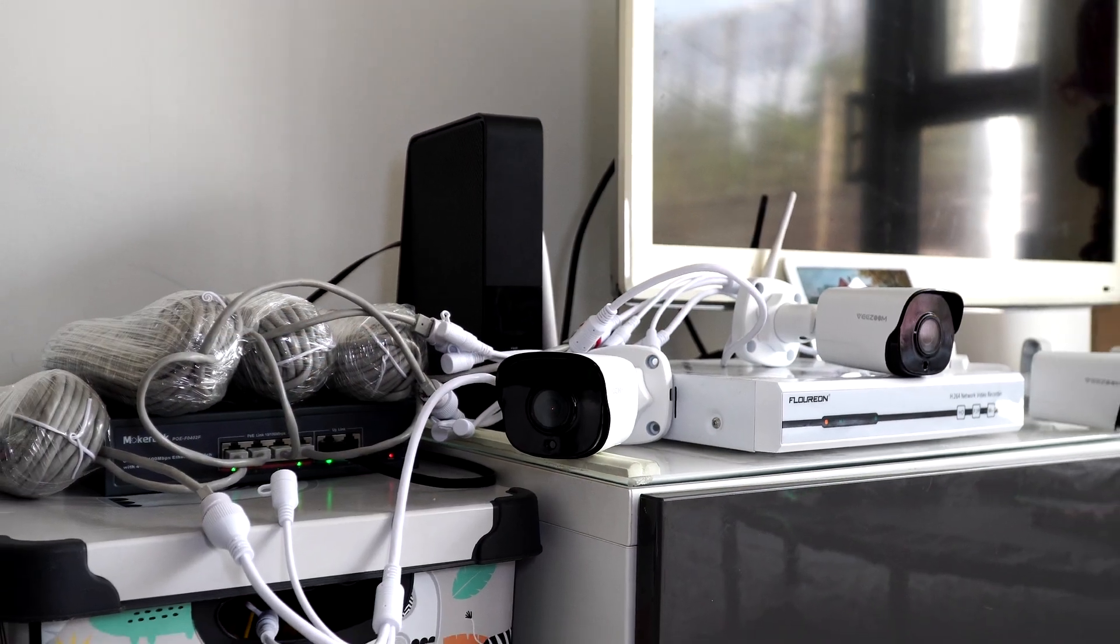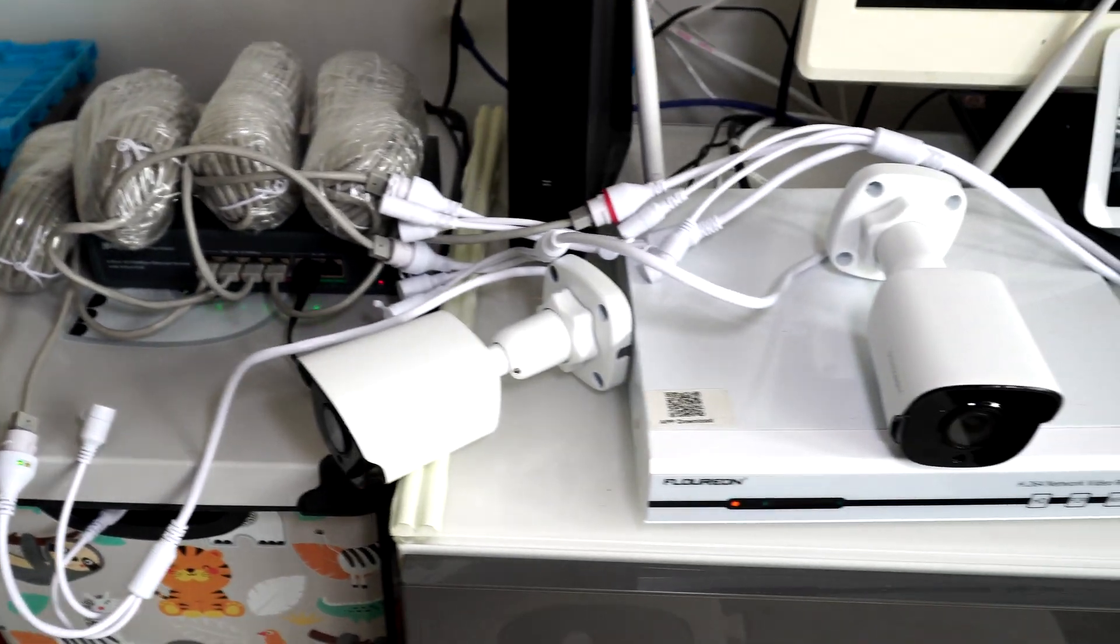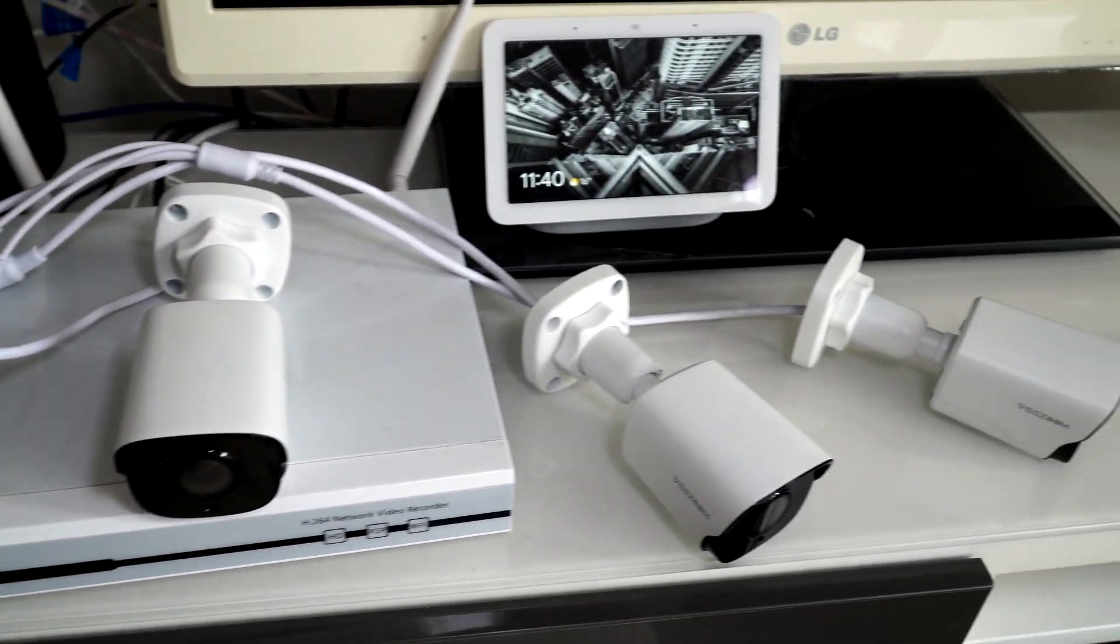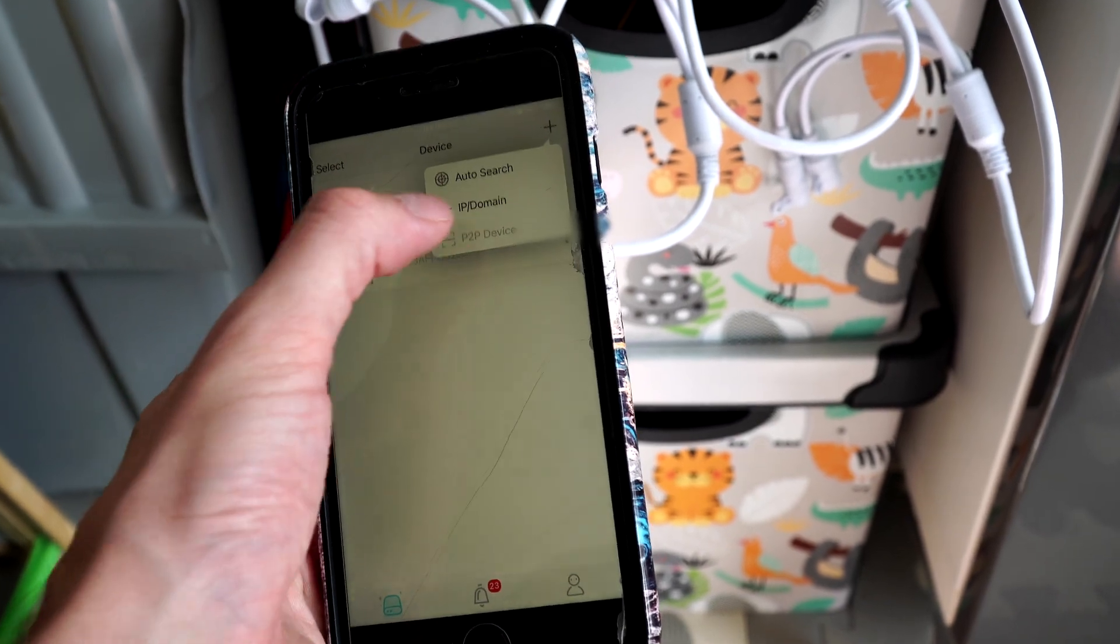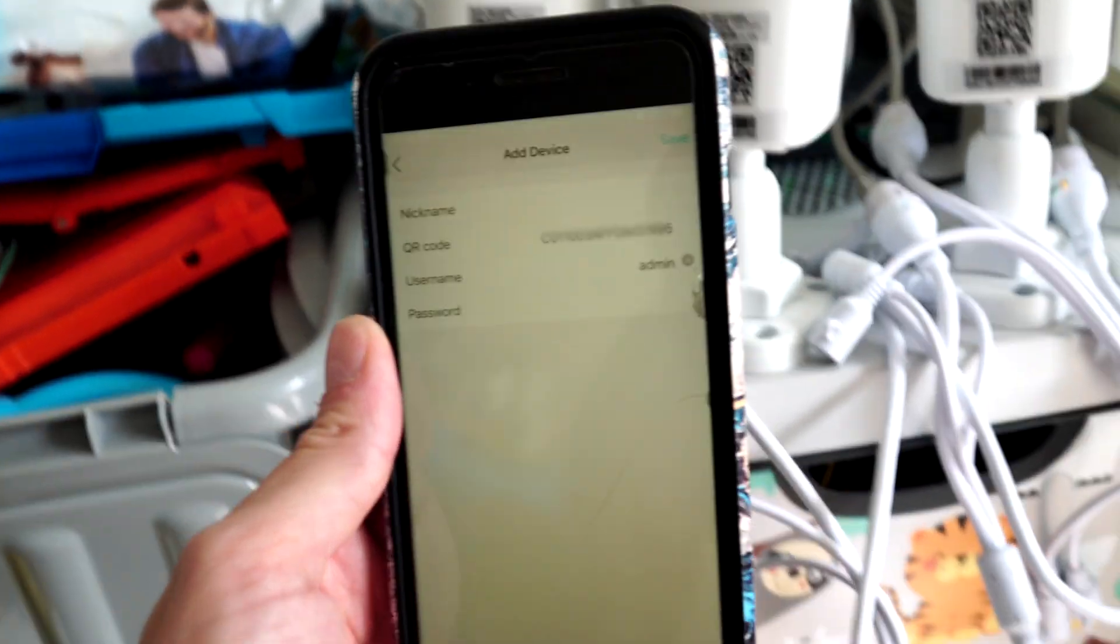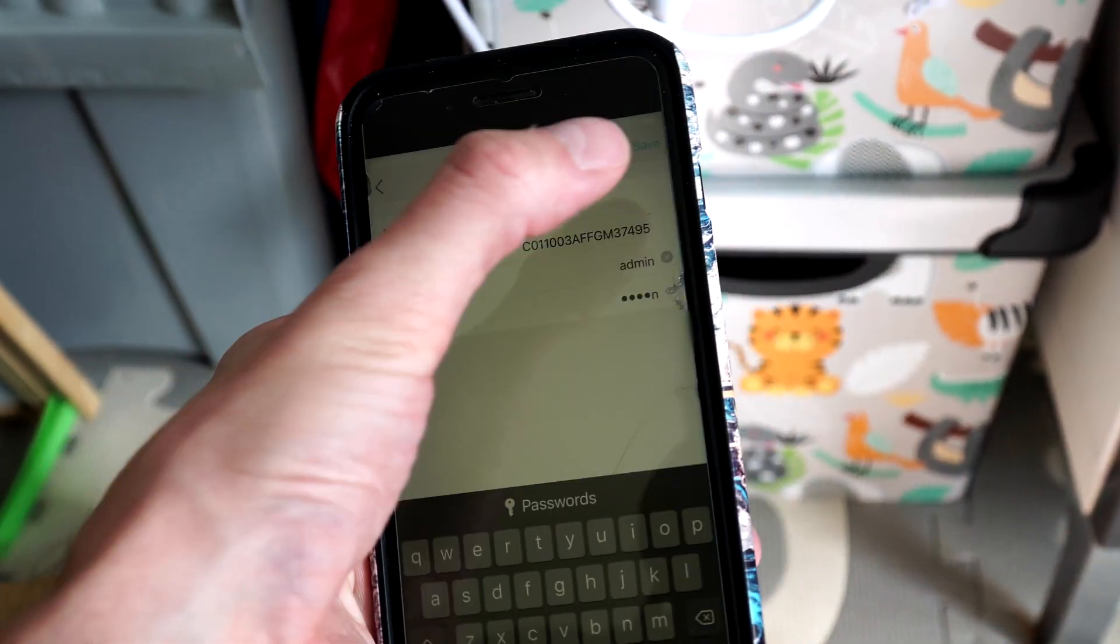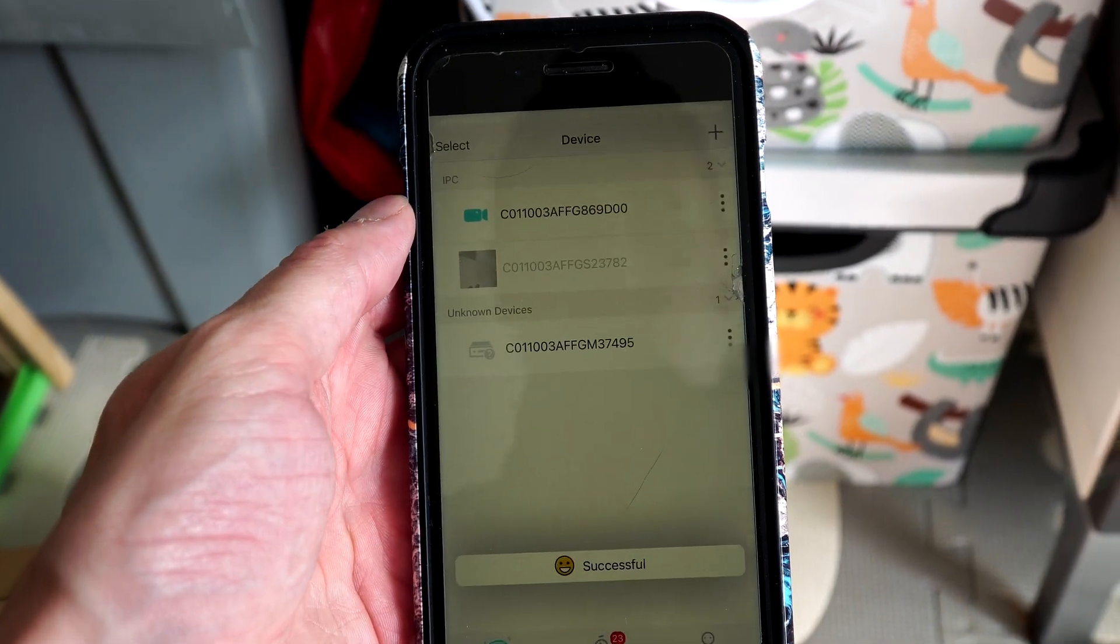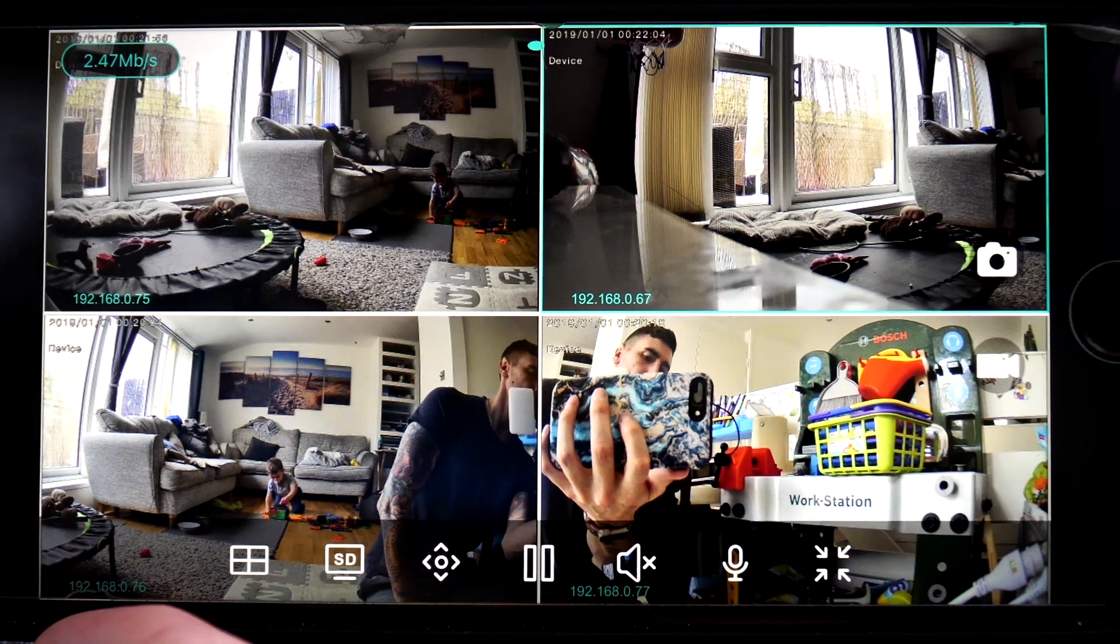Now we're going to have a look at connecting another two cameras to our PoE switch. This is just to show that we can do it, and the fact that I had four cameras, and then we'll show you what this looks like. As we said before, make sure when adding the camera, we go on the P2P device, and scan the QR code on the camera, so we can still access these cameras remotely. With the auto search, you'll only be able to access these cameras when your phone's connected to the same router, so basically being in your house. So make sure it's the P2P device.